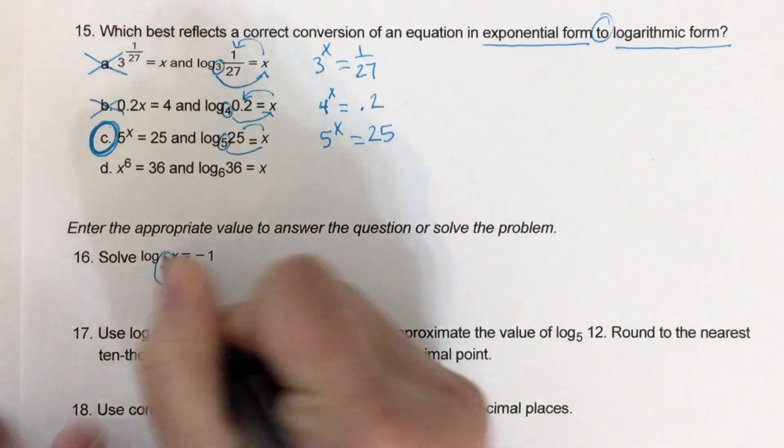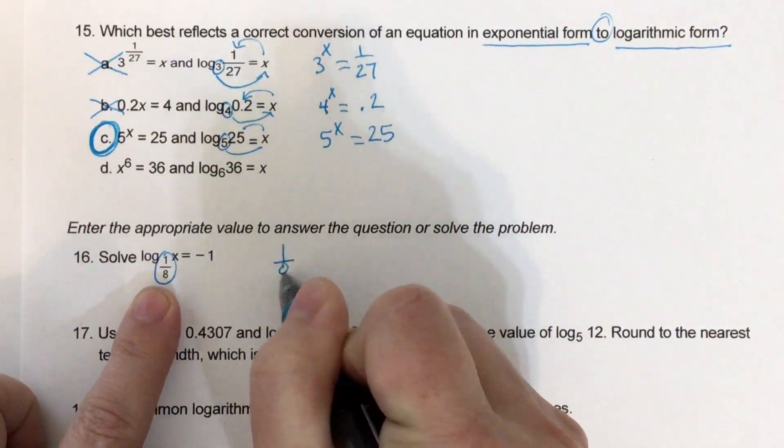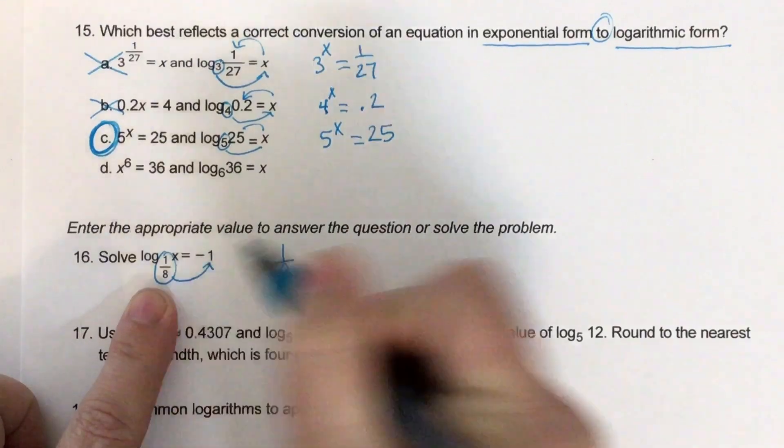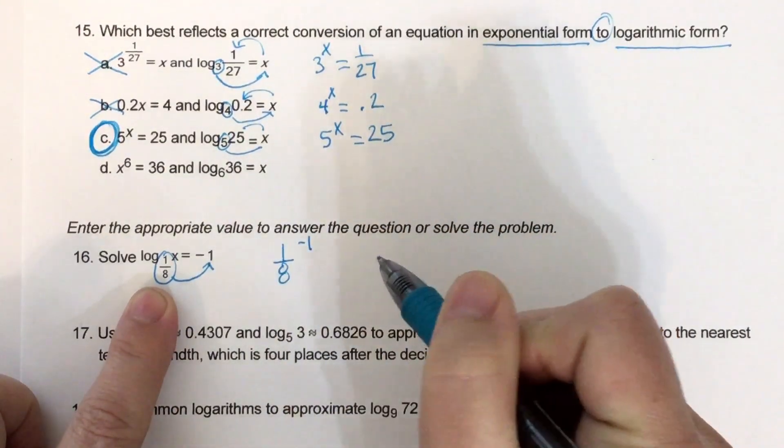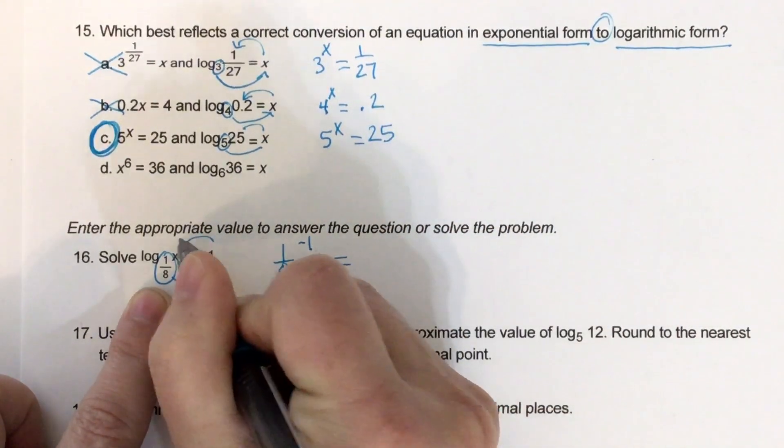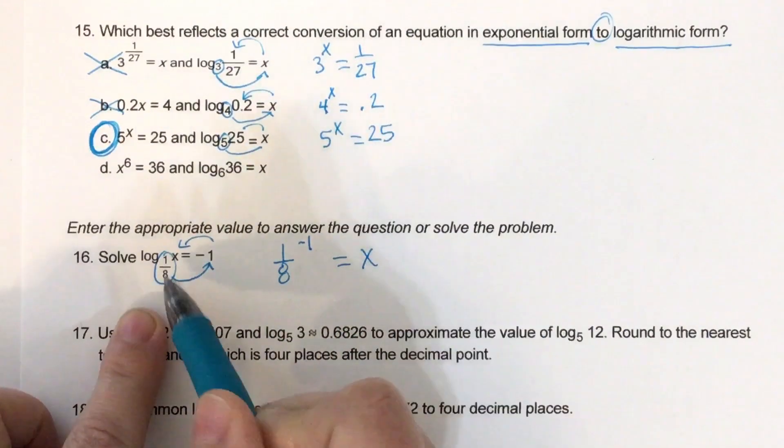So we start with the base, raise it to the negative 1, and then that will equal x. So it's like going around the world.